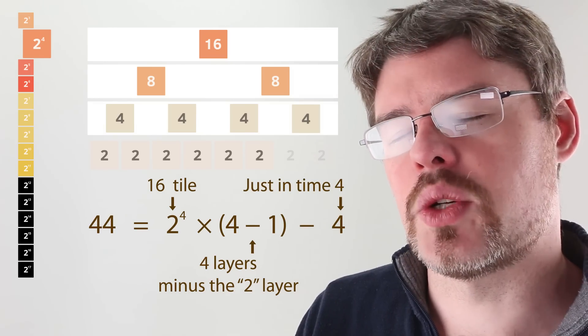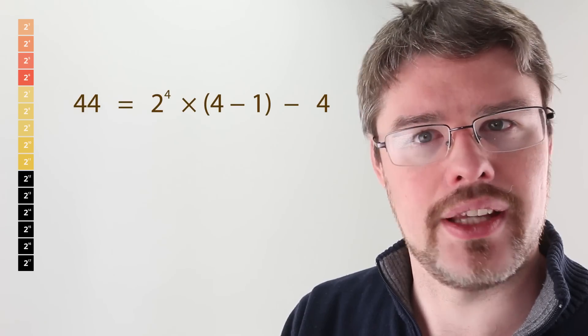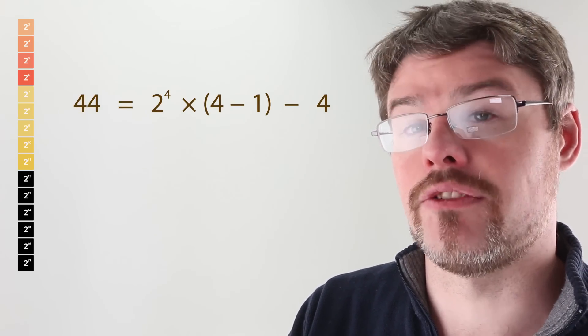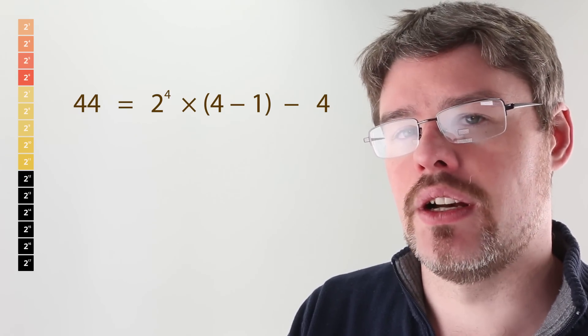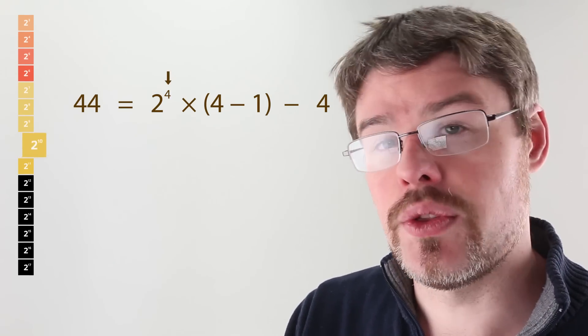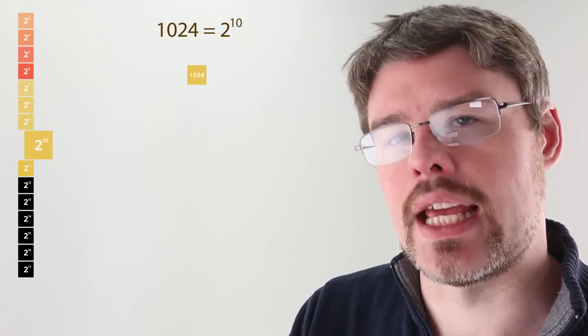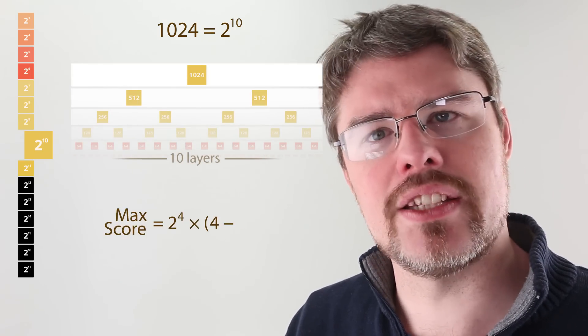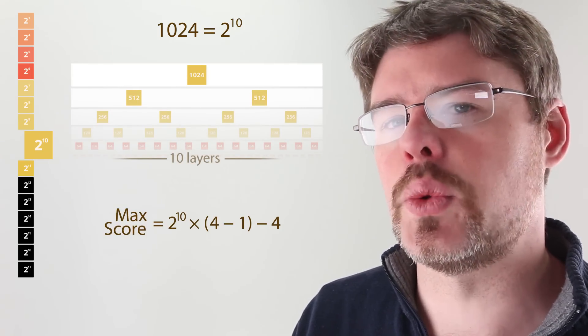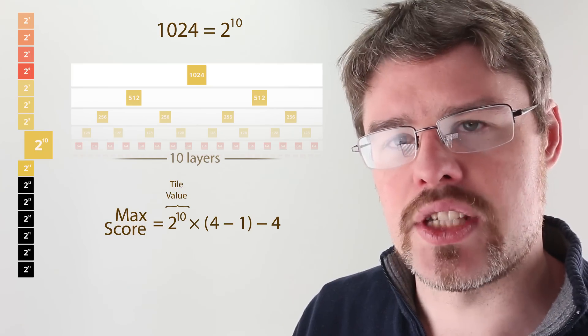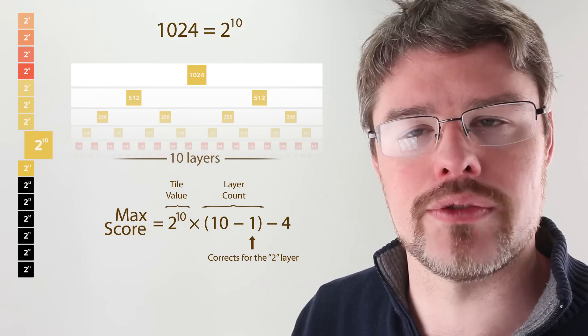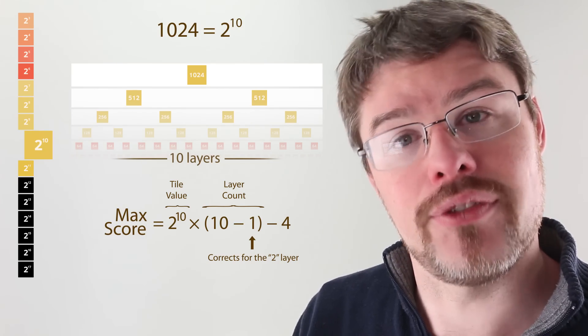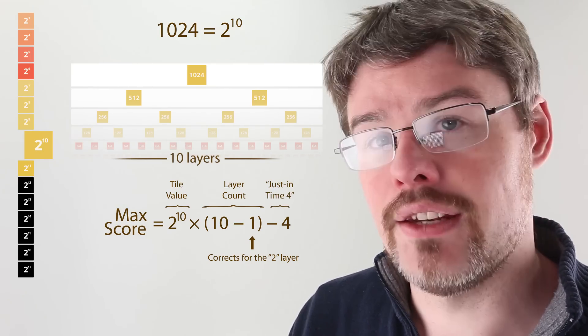But what if I wanted to actually do this for any of the other larger tiles? The thing is that the bigger the tile, the larger this calculation is going to be. Wouldn't it be nicer if I could just figure out a formula that I could plug values into? In fact, there's one really obvious value here, and that is the power of 2. So, this 1024 tile is 2 to the 10th. Instead of figuring this whole thing out by hand, let me take this formula here and change that 4 to a 10. This is a 2 to the 10th tile, and there's 10 minus 1 layers, because that 1 layer is still a layer of 2s that we didn't get score for. And we still have to subtract off that 4 because it was the just-in-time 4 I mentioned earlier.